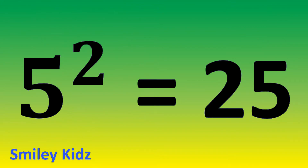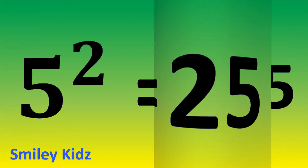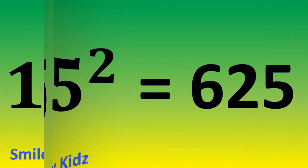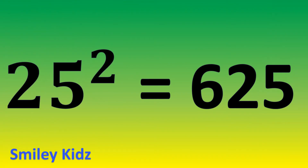5 square is 25. 15 square is 225. 25 square is 625.